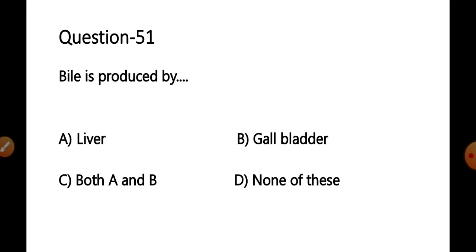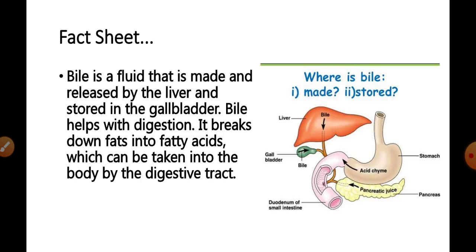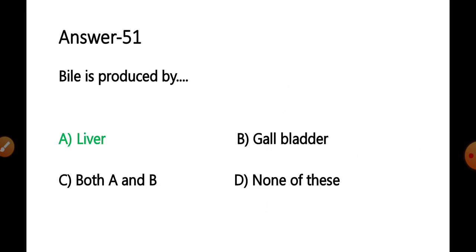Question 51: Bile is produced by — options: A) liver, B) gallbladder, C) both A and B, D) none of these. Bile is a fluid that is made and released by the liver and stored in the gallbladder. Bile helps in digestion by breaking down fats into fatty acids, which can then be absorbed by the digestive tract. The correct answer is option A — liver.